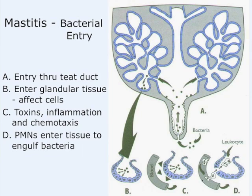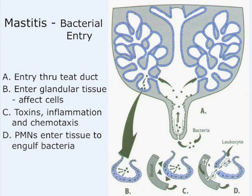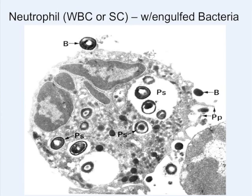Somatic cell count is the count of these white blood cells per milliliter. We consider counts below 100,000 very good — that's 100,000 cells per 30 drops of milk. When we have mastitis, white blood cells are attracted in large numbers and counts can get up into the millions. This process of attraction is called chemotaxis.